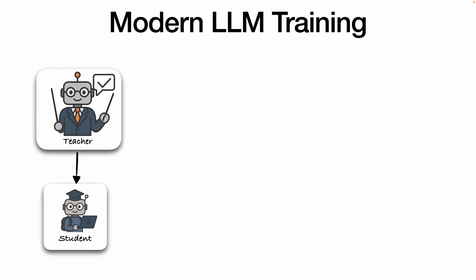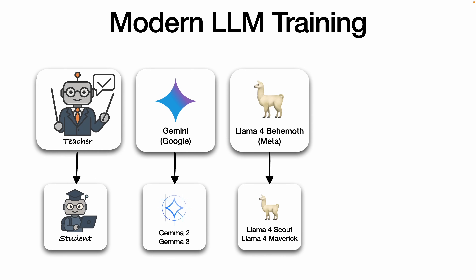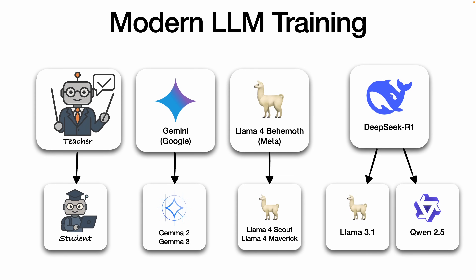Now, let's fast-forward to today. As we saw at the start of the video, a lot of LLM papers mention knowledge distillation, but not all distillation claims are created equal. In the open-source ecosystem, there are three prominent LLM providers that embrace distillation. Google's proprietary Gemini was distilled into the open-source models Gemma 2 and 3; Meta's Llama 4 Behemoth into Llama 4 Scout and Maverick; and DeepSeek, which is a mixture of experts, was distilled into dense students with a different architecture from their teacher, including Llama 3.1 and Qwen 2.5.